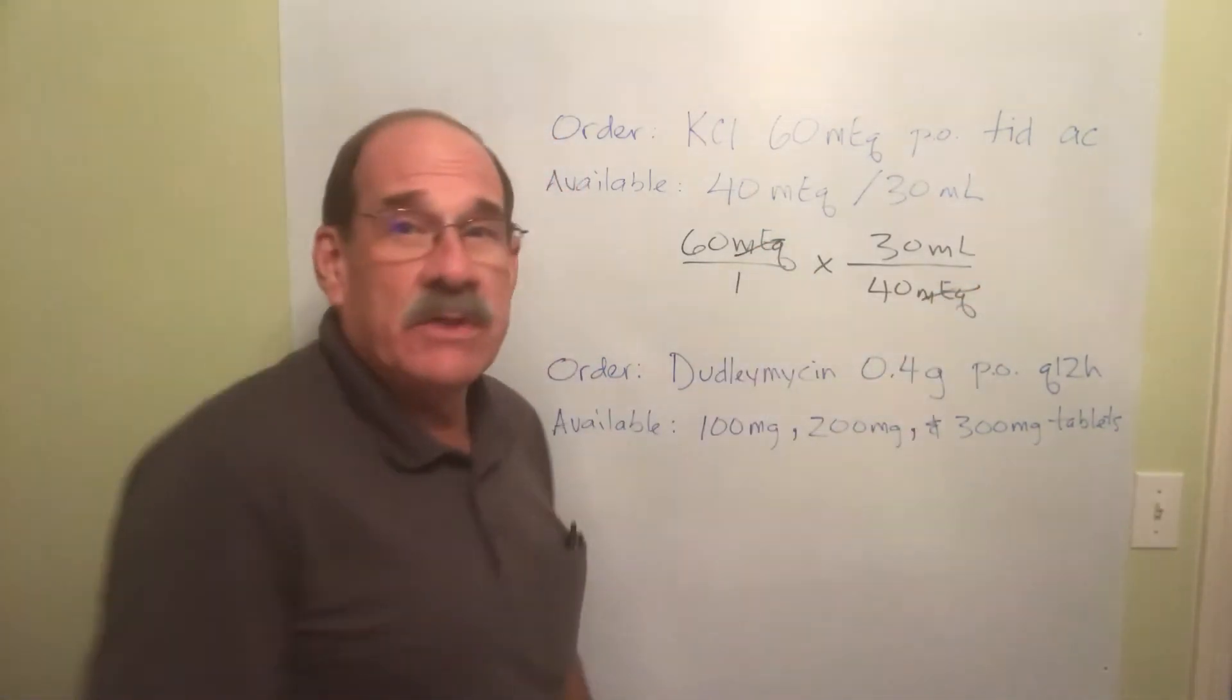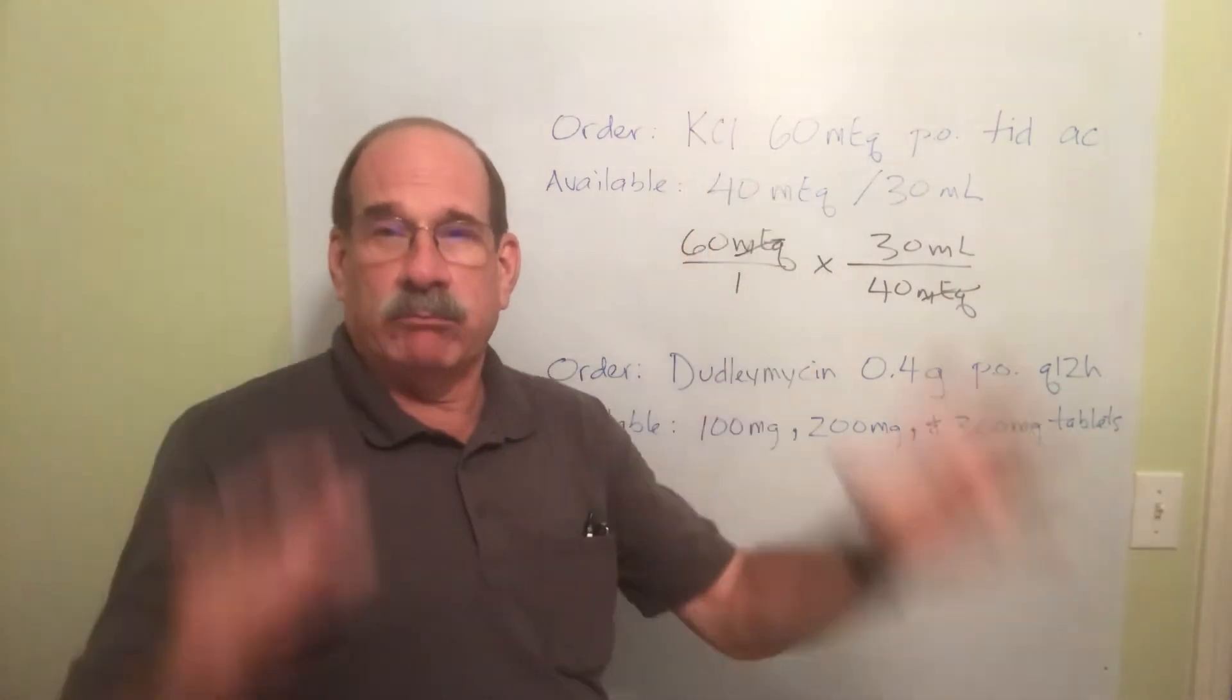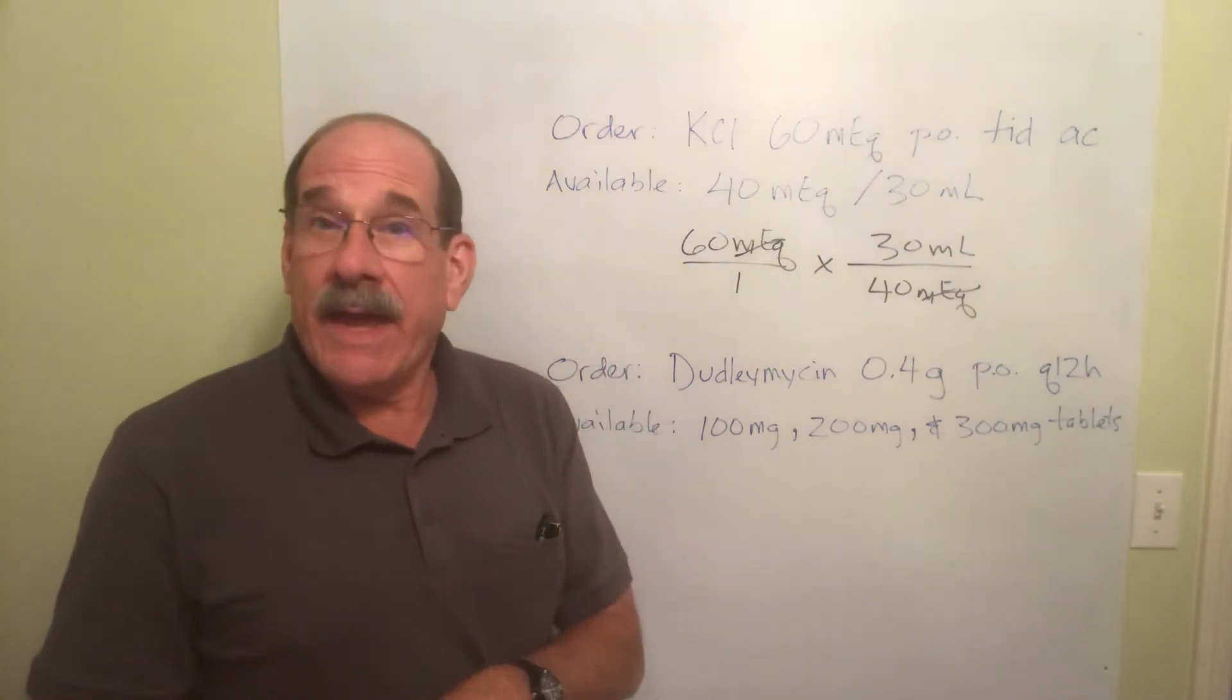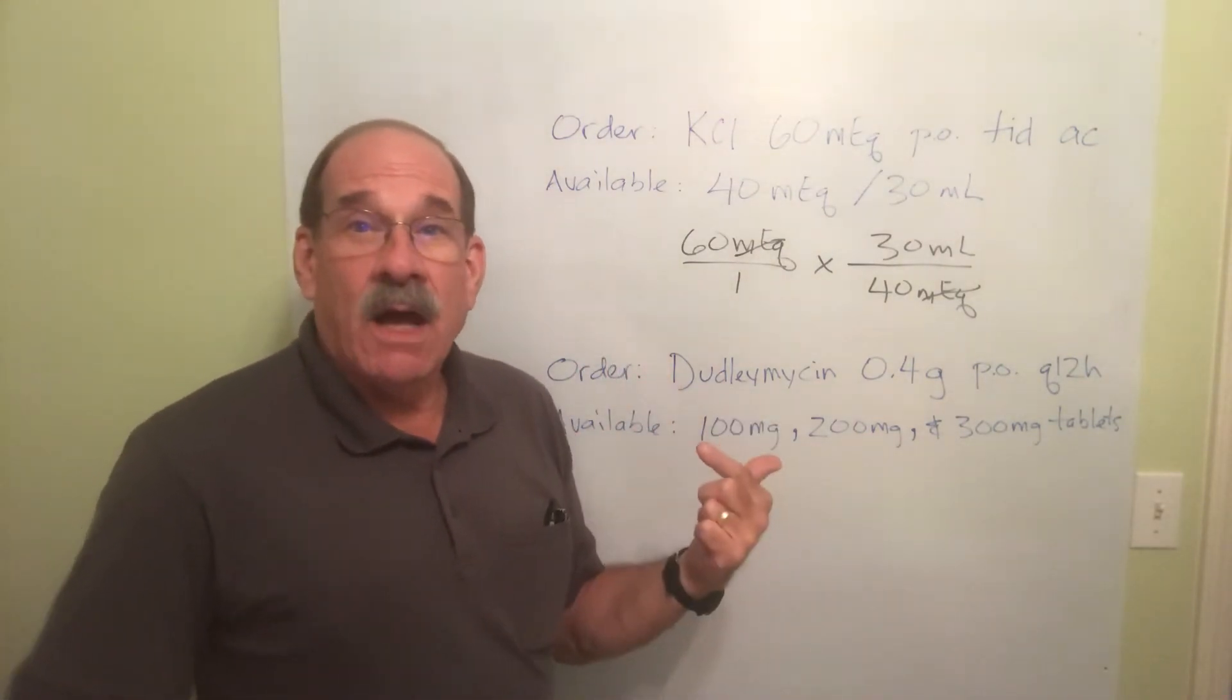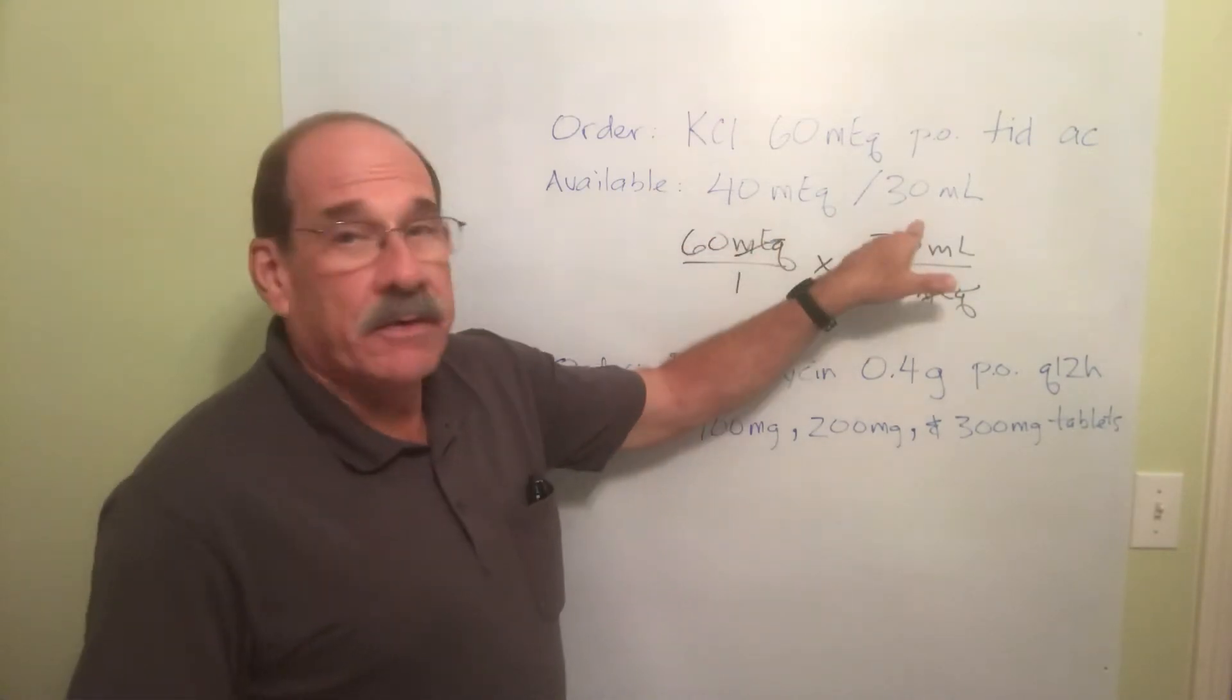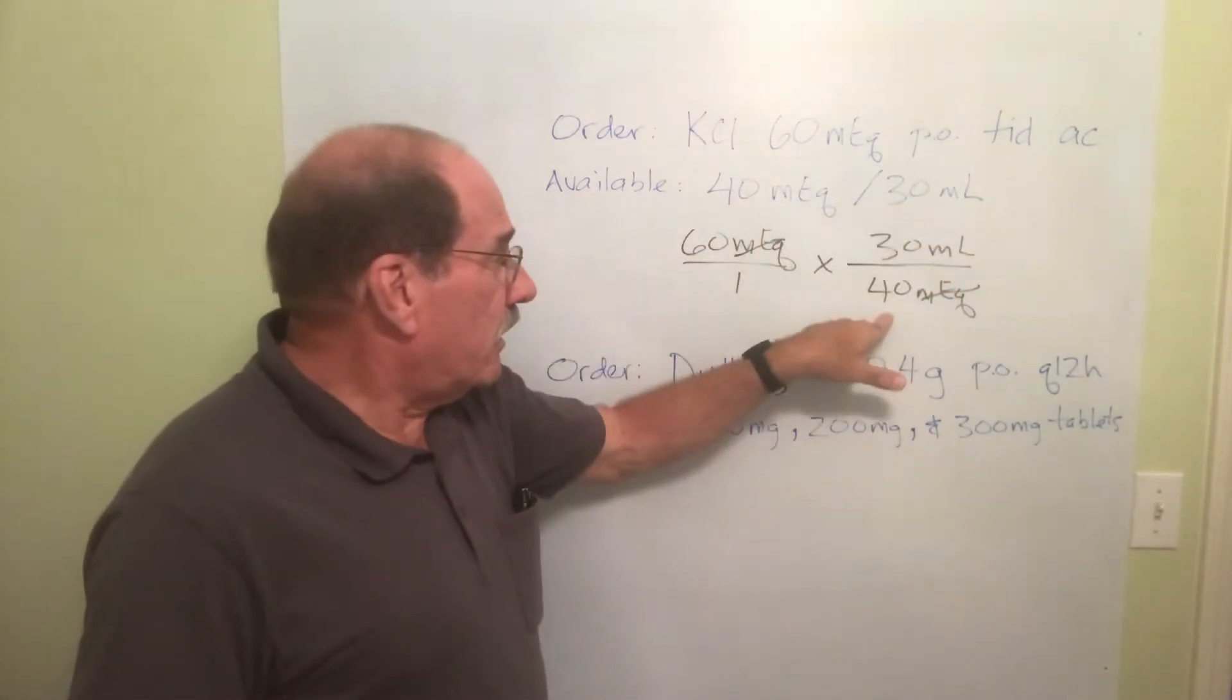Now we have - oh, we have three non-one numbers: two on the top, 60 here and 30 here, one on the bottom here.